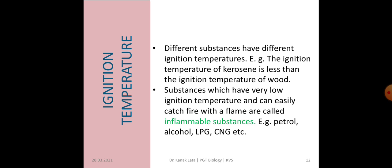Substances which have a low ignition temperature catch fire easily and burn with a flame. They are called inflammable substances. For example: petrol, alcohol, LPG, and CNG. These are all called inflammable substances because they catch fire very easily, and their ignition temperatures are very low.